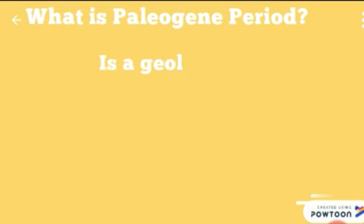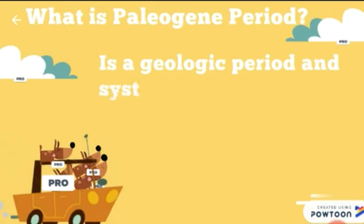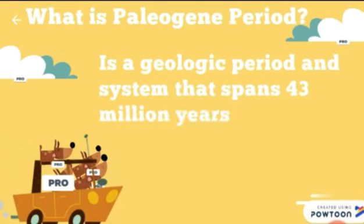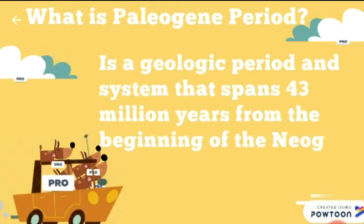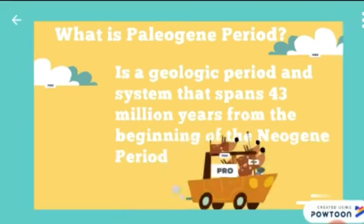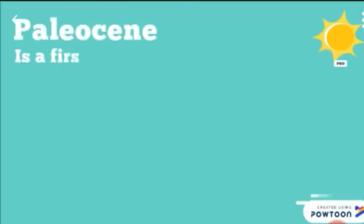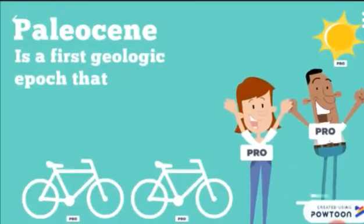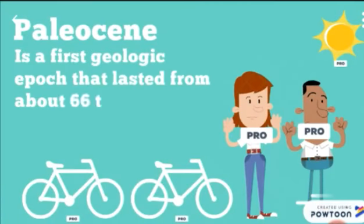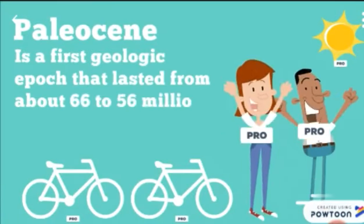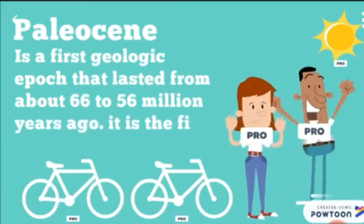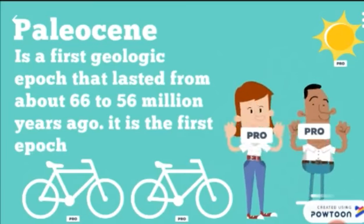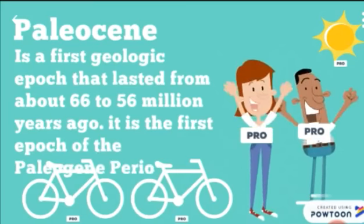What is the Paleogene Period? It is a geologic period and system that spans from the beginning to the end of the Neogene Period. The Paleocene Epoch is the first geologic epoch, lasting from about 66 to 56 million years ago, and is the first epoch of the Paleogene Period.